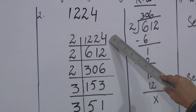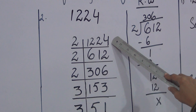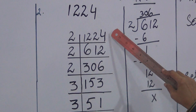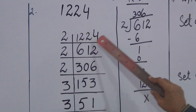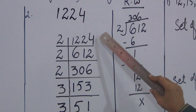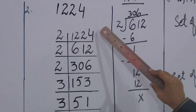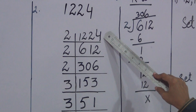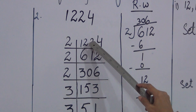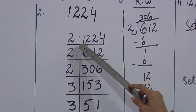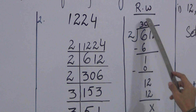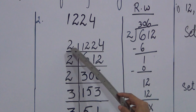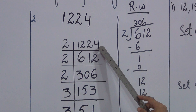For 1224, first we check whether it is an even number or not by checking the last digit. The last digit is 4. Since 4 is an even digit, 1224 is an even number, because if the last digit is 0, 2, 4, 6, or 8, the number is even. So 1224 is divided by 2. 612 is the answer. 2 multiplied by 612 is 1224.